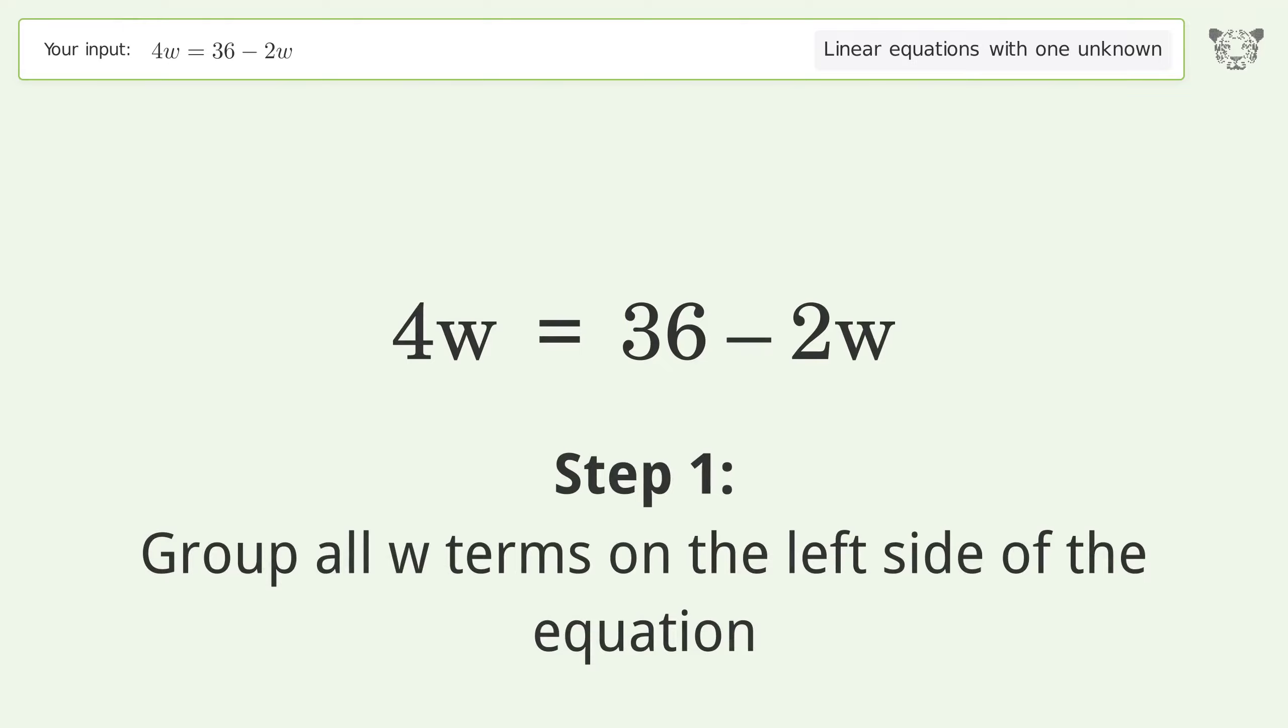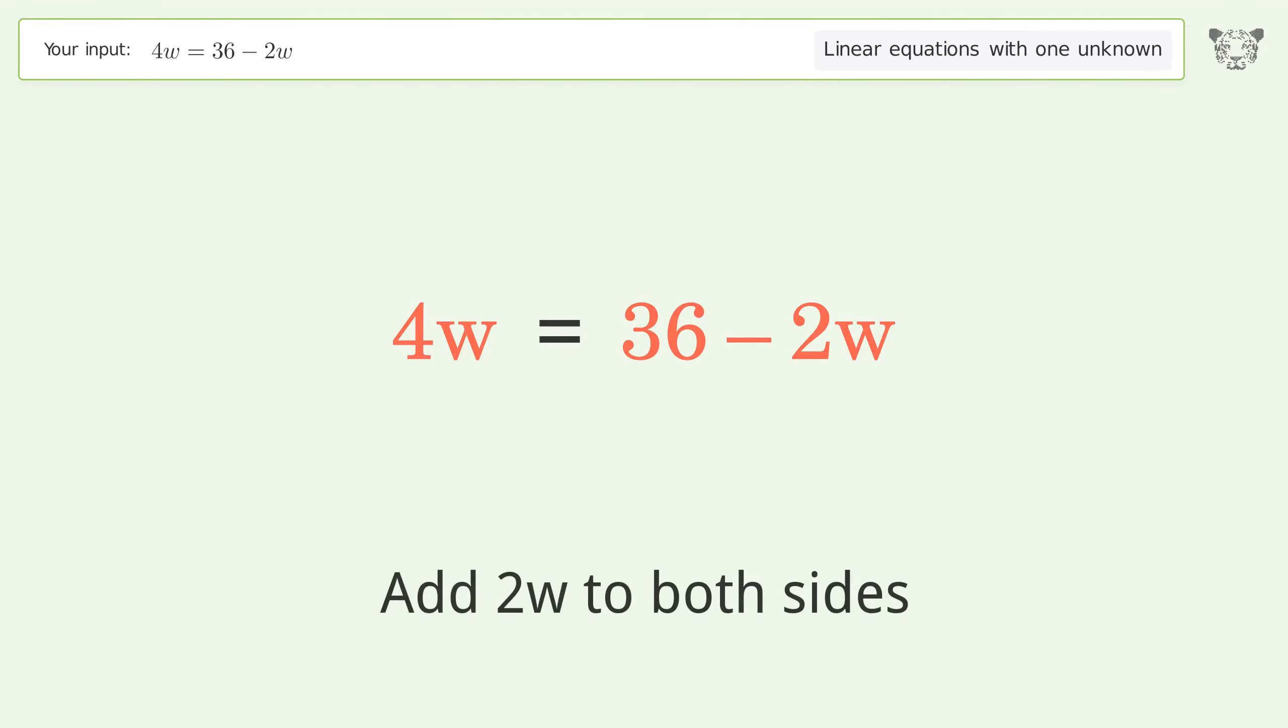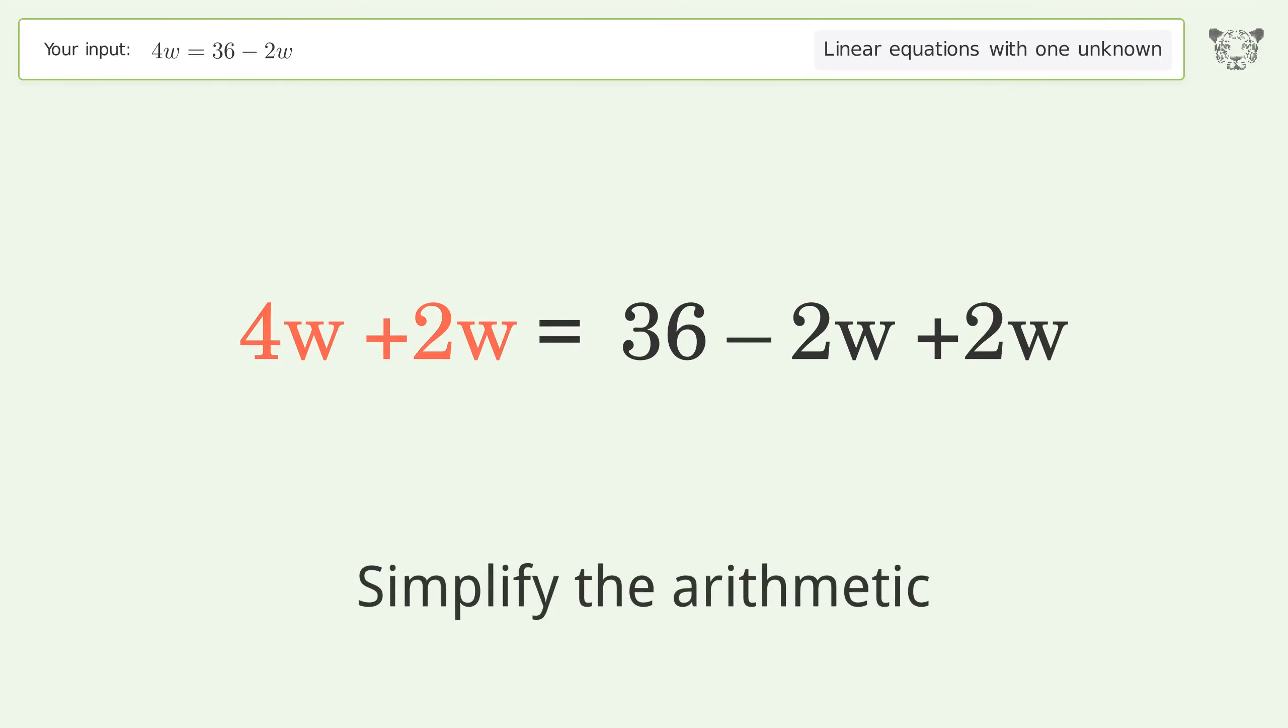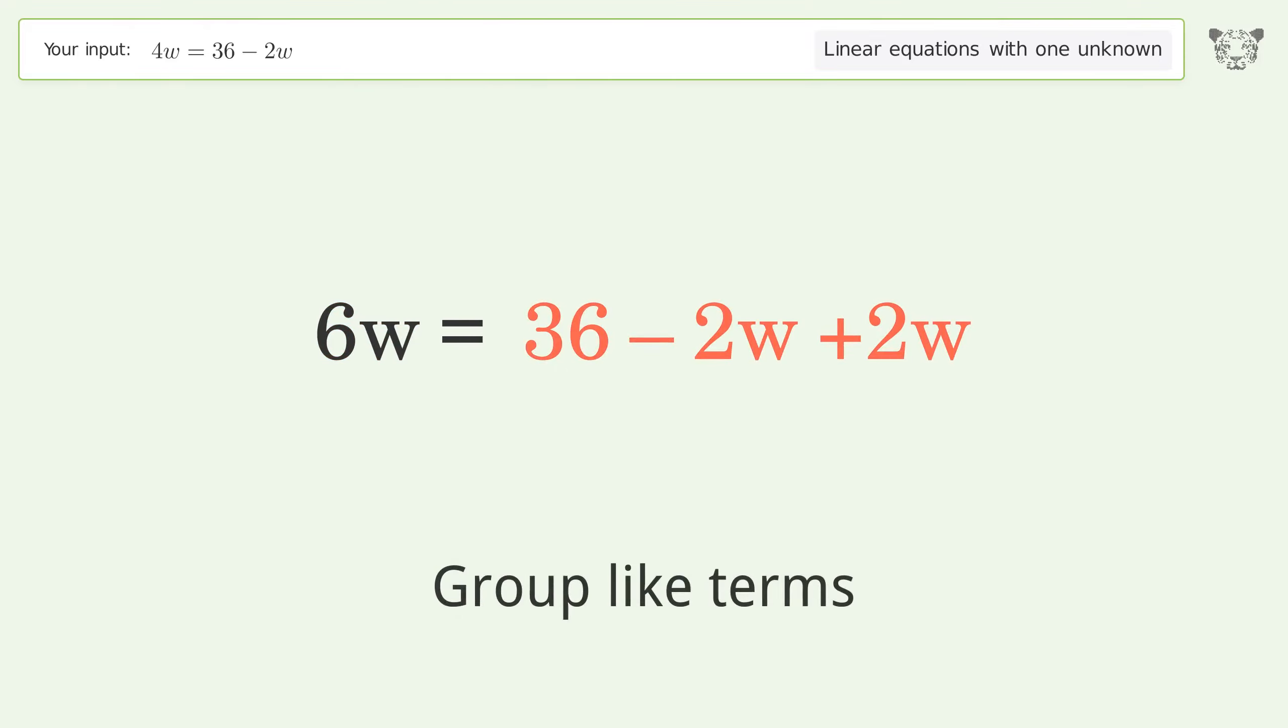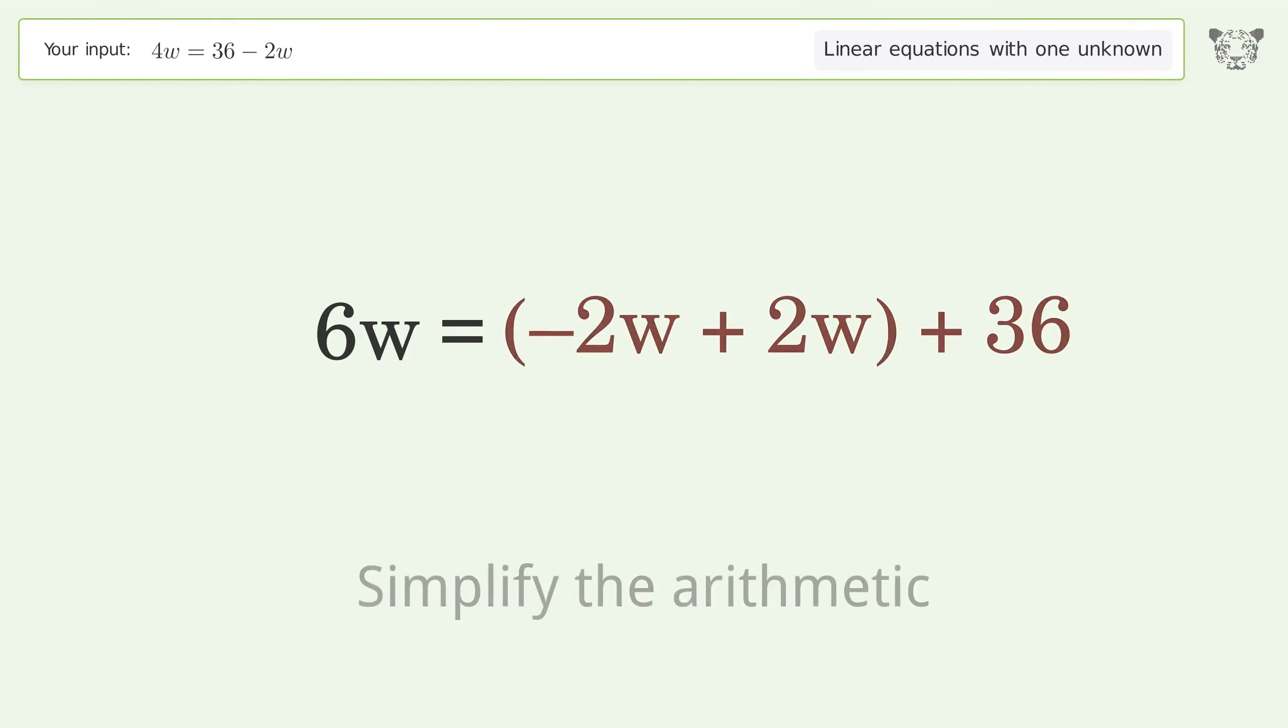Group all w terms on the left side of the equation. Add 2w to both sides. Simplify the arithmetic. Group like terms. Simplify the arithmetic.